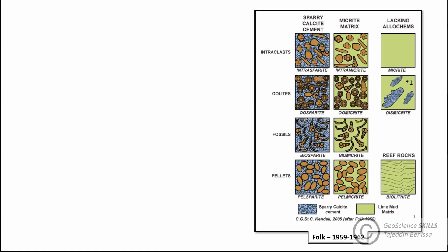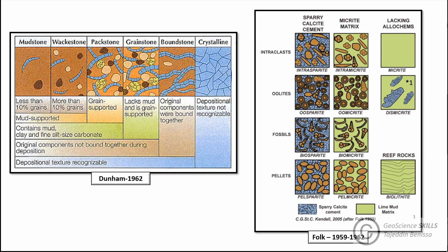Carbonate rocks have been classified based on the texture metric, specifically the grain-to-matrix ratio. Two well-known standard classifications have been used for a long time: Folk 1959 and Dunham 1962. Folk details the relative proportions of allochems in the rock and the type of matrix, giving a texture name based on whether grains are embedded in micrite or autogenic minerals such as sparry calcite.